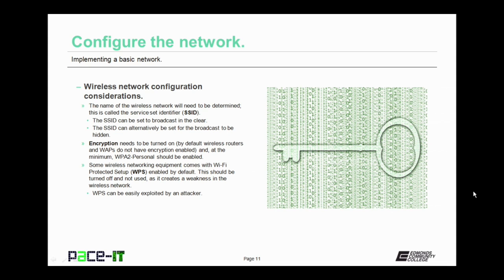Let's move on to wireless network configuration considerations. The first thing to consider is the name of the wireless network — that's the Service Set Identifier, the SSID. The SSID can be set to broadcast in the clear, or alternatively, it can be set so the broadcast is hidden. Some people consider hiding the SSID broadcast a security measure, but it really doesn't work that way. It doesn't stop the broadcast — it only hides it. A packet sniffer can easily see those broadcasts and interpret those packets, so hiding the SSID is not an effective security measure, though it does make things slightly more difficult.